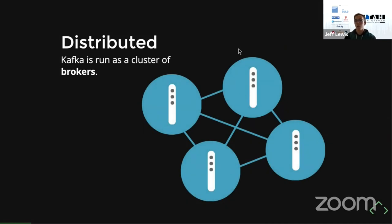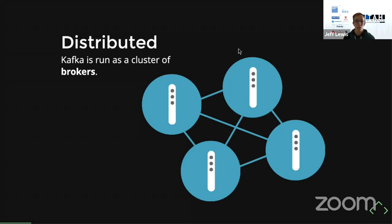Kafka is not just a log, but a distributed log. You don't want to think of it as a singular service, but rather as a cluster of brokers — which are essentially nodes. In a high-level diagram, you can see different logs on different brokers forming a cluster, and all those brokers are able to talk to each other. Your producers and consumers would talk to those different nodes in the cluster.